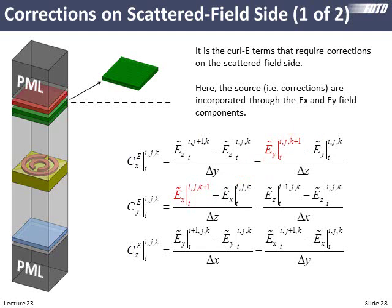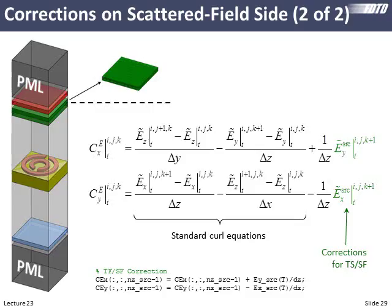These two terms are total field quantities, so we subtract the source from them to make them look like scattered field quantities. When we do that, we get our original curl equations back, which means we can set up our double loop, calculate curl without knowing anything about total field scatter field, and then set up another double loop at the interface to add and subtract the two correction terms — adding a correction to the X component of curl and subtracting a correction from the Y component. Two simple lines of code in MATLAB.